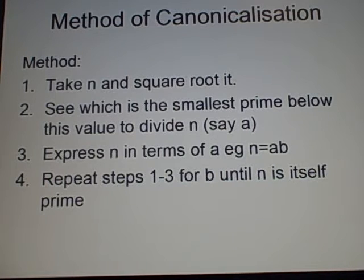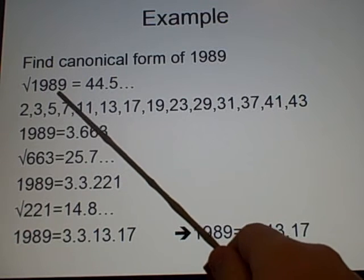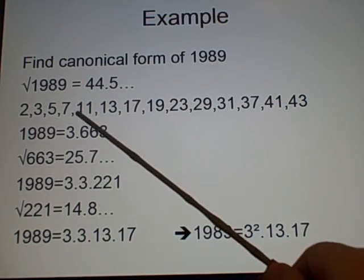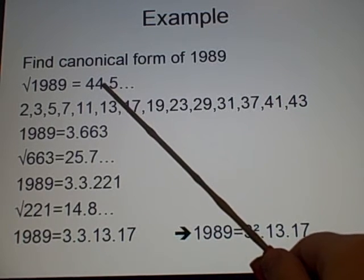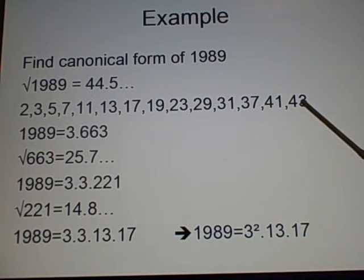Now I've got an example if that didn't make any sense. Find the canonical form of 1989. Now this is the year I was born. You find the square root, which is 44.5 and so on. And you have all the primes less than or equal to 44. So all of these are primes.